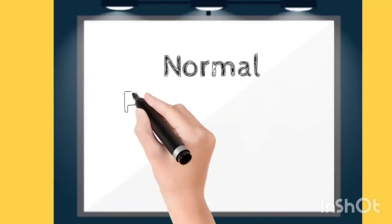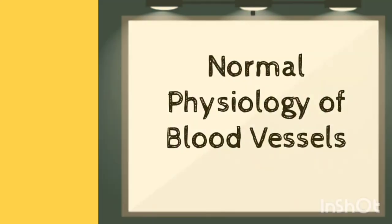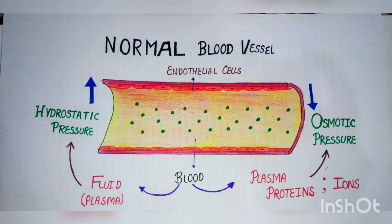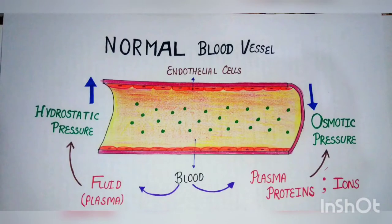To start with, we will first look at the normal physiology of blood vessels. In the diagram, you can see that human vessels — their outermost lining is made up of endothelial cells. These undamaged endothelial cells are intact.